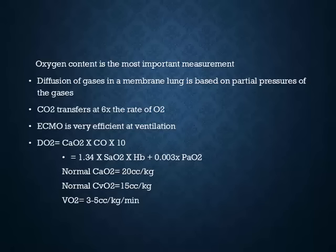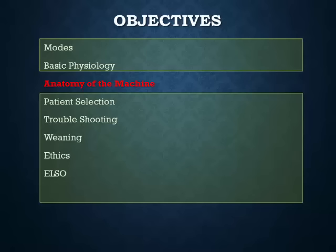Oxygen content and oxygen delivery are the most important measurements we have for ECMO. The diffusion of gases in a membrane lung is based on partial pressures of the gases, not very different from native lungs. Remember that carbon dioxide transfers at six times the rate of oxygen due to its solubility properties. ECMO is very efficient at ventilation. You're already familiar with the oxygen delivery formula — the factors in your control are cardiac output and oxygen content, which you manage via hemoglobin and oxygen saturation, and to a much lesser degree PaO2.